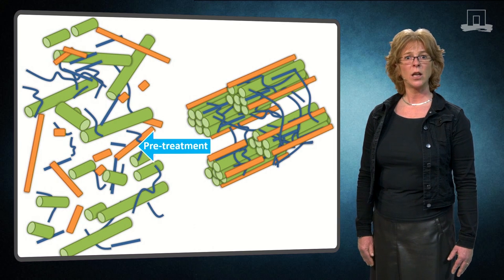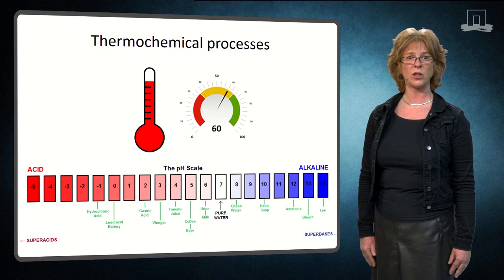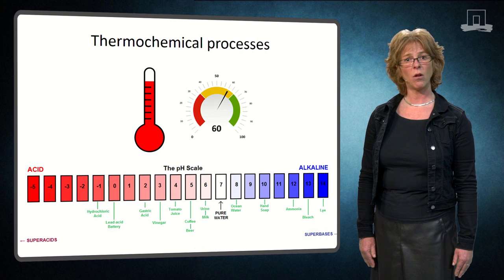Alternatively, to remove hemicelluloses and lignin requires thermochemical processes that use chemicals such as water, acid or alkali.